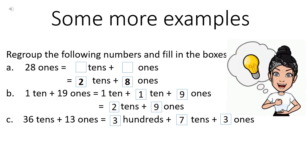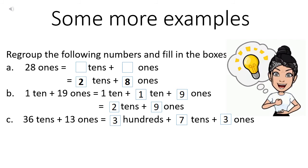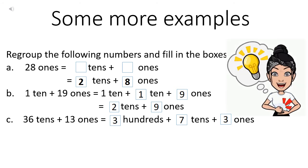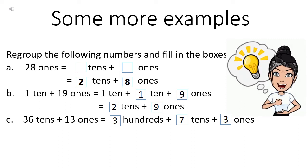Now let's take some more examples. We are given the question: regroup the following numbers and fill in the boxes. These are the questions you are going to do in your notebook. Suppose part A is given twenty-eight ones and you have to tell how many tens and how many ones. So twenty-eight will be regrouped as two tens plus eight ones. Writing T and O above will clearly show that you have two tens and eight ones.